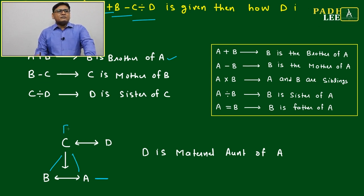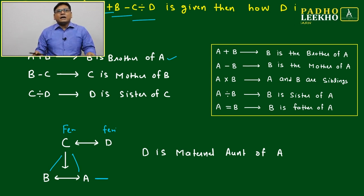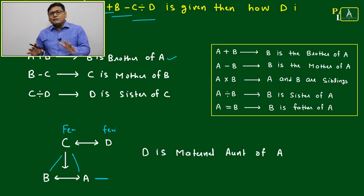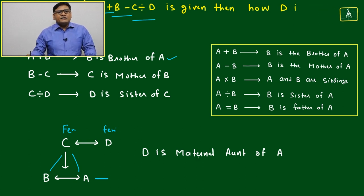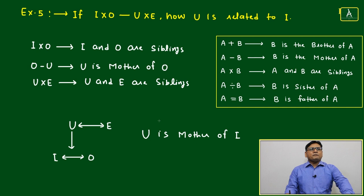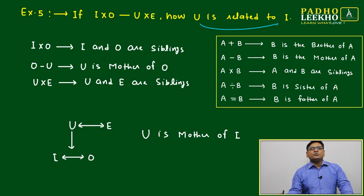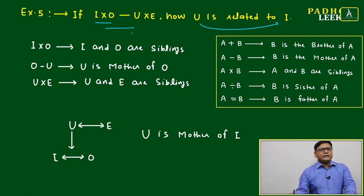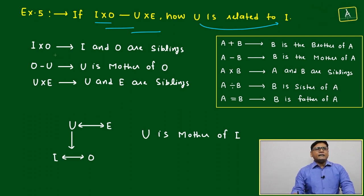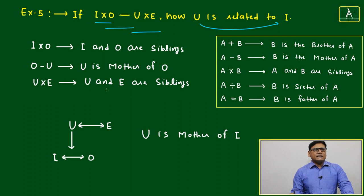Both C and D are feminine gender — this is what we must be careful about. When two people are at the same generation, we need to note whether both are masculine, both feminine, or one of each. So D is the maternal aunt of A. Coming to question number 5: I multiplied by O, minus U multiplied by E — how is U related to I? There are three symbols, so we break it into three relations: I into O means I and O are siblings.